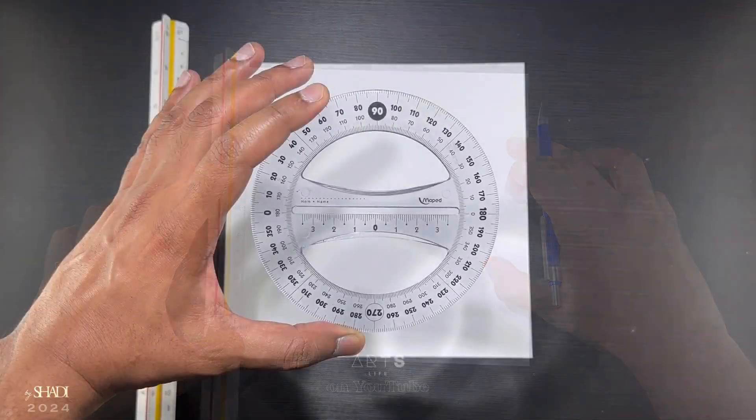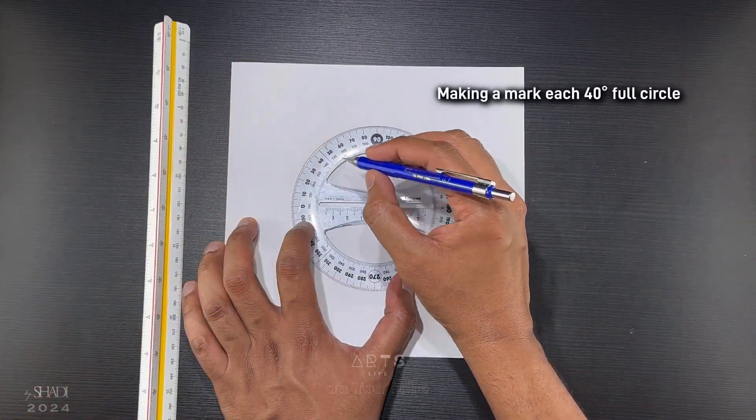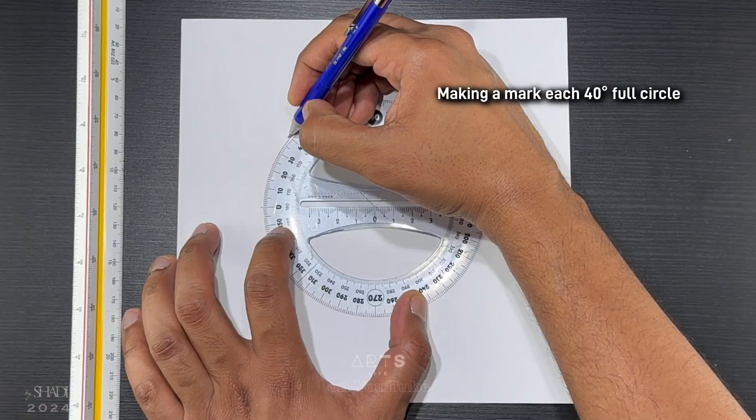After determining the center point of the page, I will make marks each 40 degrees for the full circle by using the protractor.